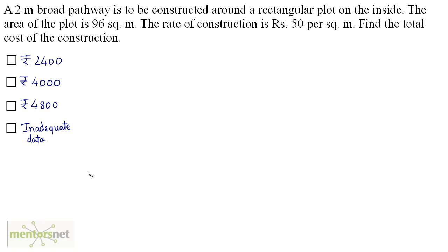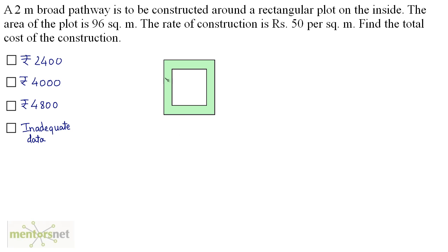A 2 meters broad pathway is to be constructed around a rectangular plot on the inside. The area of the plot is 96 square meters, and the rate of construction is 50 rupees per square meter. Let the length and breadth of the rectangular plot be L and B, so L times B equals 96. The inner rectangle's length will be L minus 4 and breadth will be B minus 4.